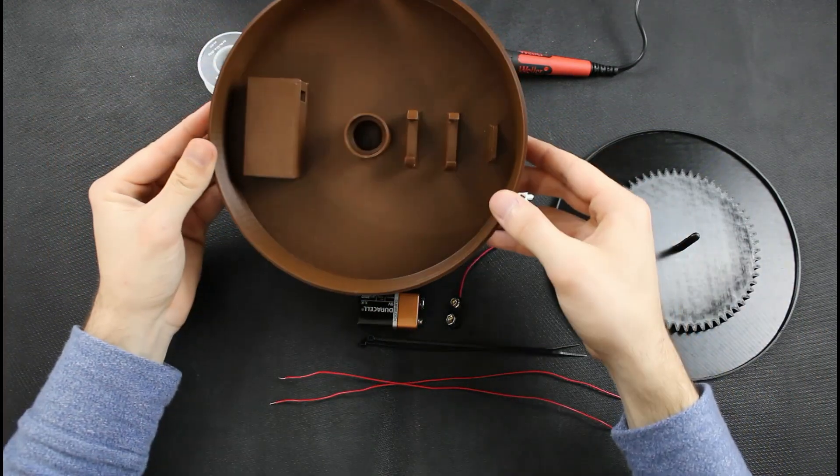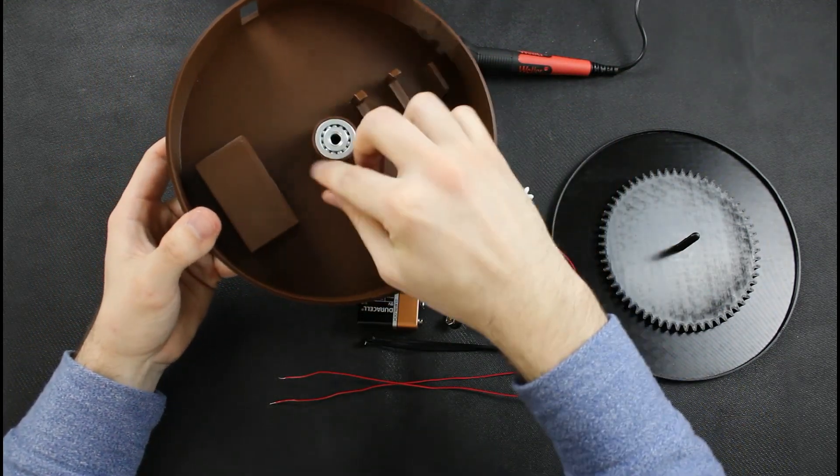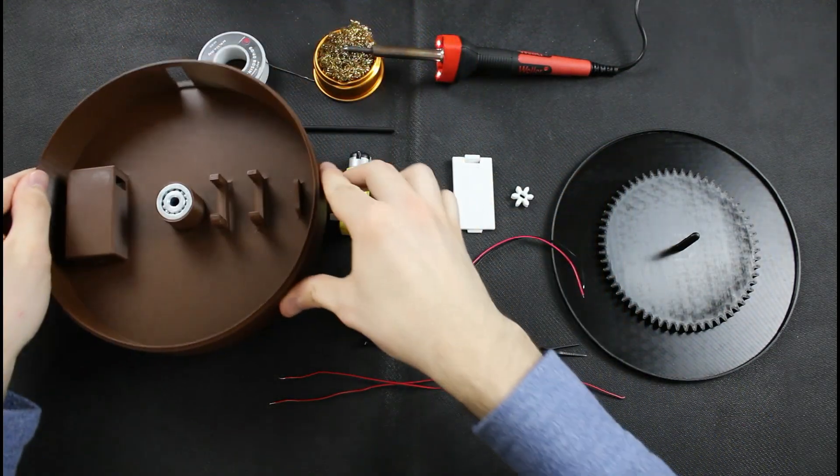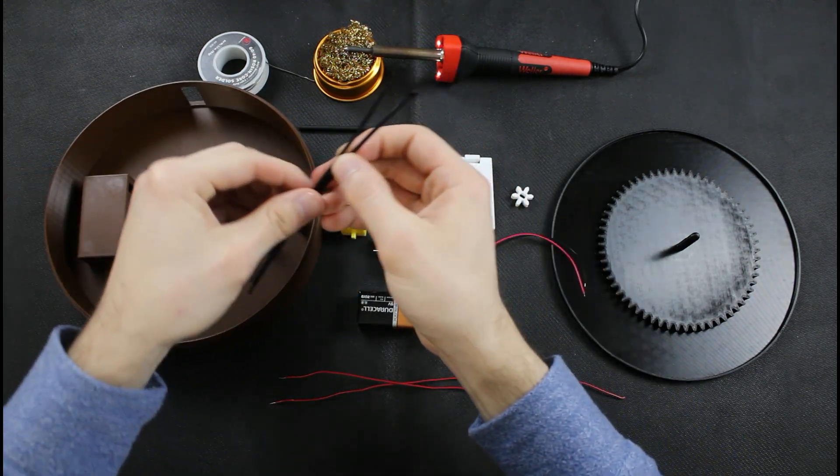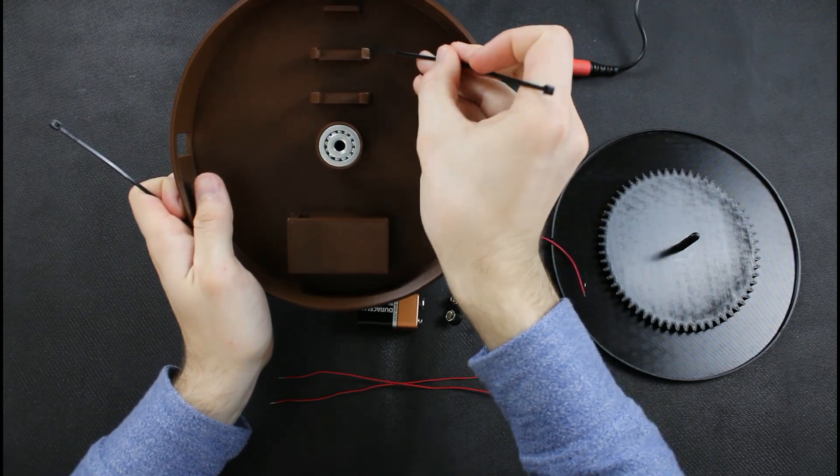So to start I'm going to assemble the base and first just place the bearing into its position. I could put some glue around it but for now I'm going to leave it as just a press fit, and then I'll slide the two zip ties into their respective slots.